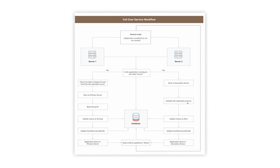How does it work? Here is a flow diagram that explains how the failover service works. We have two servers — server one and server two — which have the same installation of ServiceDesk Plus but on two separate physical boxes. These two server boxes are connected to a common database server. When the primary server is started, the server checks for any previously configured or previous occurrence of instances. If there is no previous occurrence of instances, it means the server is good to go and the primary server is started. Once the primary server starts, it binds to the virtual IP and then it updates its serving status and its heartbeat continuously into the database.